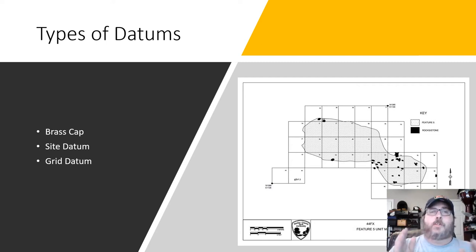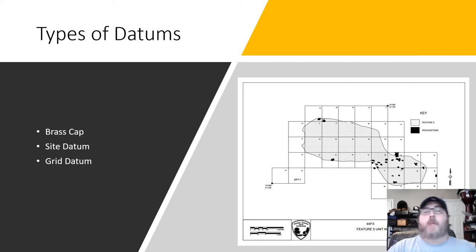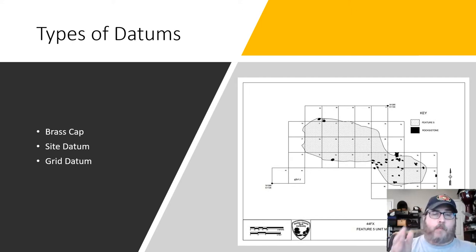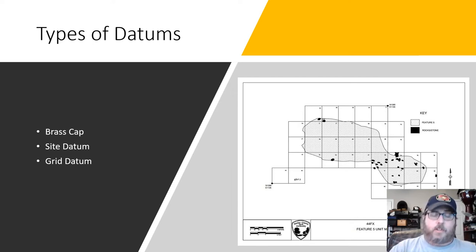Everything starts with the datum — a fixed point in time and space where one begins a site inquiry or excavation. The datum, as a fixed point, provides an absolute measurement reference for the entire site. It's a fixed location that all other measurements you're going to be doing on the site will be based off of, and that way you can create a map. If you have a fixed point in time and space, you're able to create a map of pretty much anything because you have a location you can orient to. That's basically what a datum does.